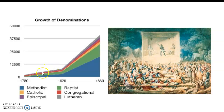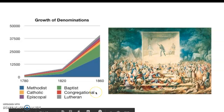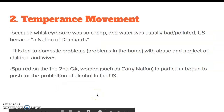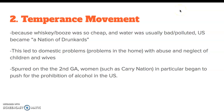Not only does our population grow, but we also see different denominations of Christianity grow as well. Number two: the temperance movement. Because whiskey and other alcohol was so cheap, and water was usually polluted and would make you sick if you drank it, the U.S. became, quote-unquote, a nation of drunkards. This led to domestic problems — abuse and neglect of children and wives, and people spending entire paychecks on alcohol.